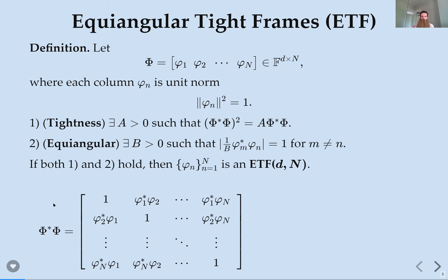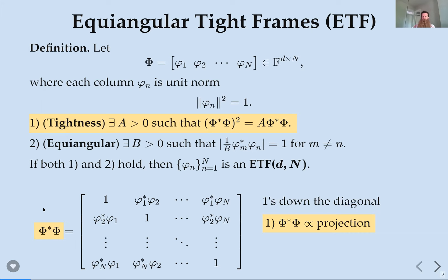I want to emphasize that the Gram matrix is of really high importance. In terms of the Gram matrix: it has ones down the diagonal (the norm squared of each vector), the tightness condition says the rows are orthogonal and equal norm — equivalently, the Gram matrix is a scalar multiple of a projection — and the equiangular condition says all off-diagonal entries have constant modulus.